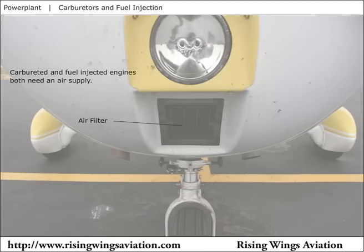Both carburetor and fuel injected engines are susceptible to impact icing, which results when the airplane flies through visible moisture that forms ice on the engine's air intake or air filter. This impact ice blocks the flow of air into the engine. To counteract impact icing, many engines include a manual or automatic valve which provides an alternate intake air supply.